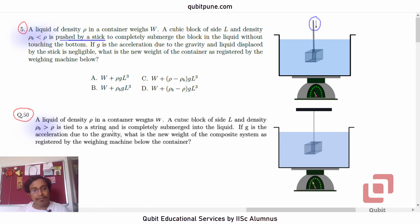Now let's read question 50. A liquid of density ρ in a container weighs W. A cubic block of side L and density ρ_B greater than ρ is tied to a string and is completely submerged into the liquid. So this time that cubic block of same dimensions, side L and density ρ_B, but this time greater than that of the liquid, is tied to a string. Here you can see the support, and this is the string. So you now see the slight differences between the two figures. It's very much like spot the differences which we used to play as a child. It's completely submerged into the liquid. If g is the acceleration due to gravity, what is the new weight of the composite system as registered by the weighing machine below the container?